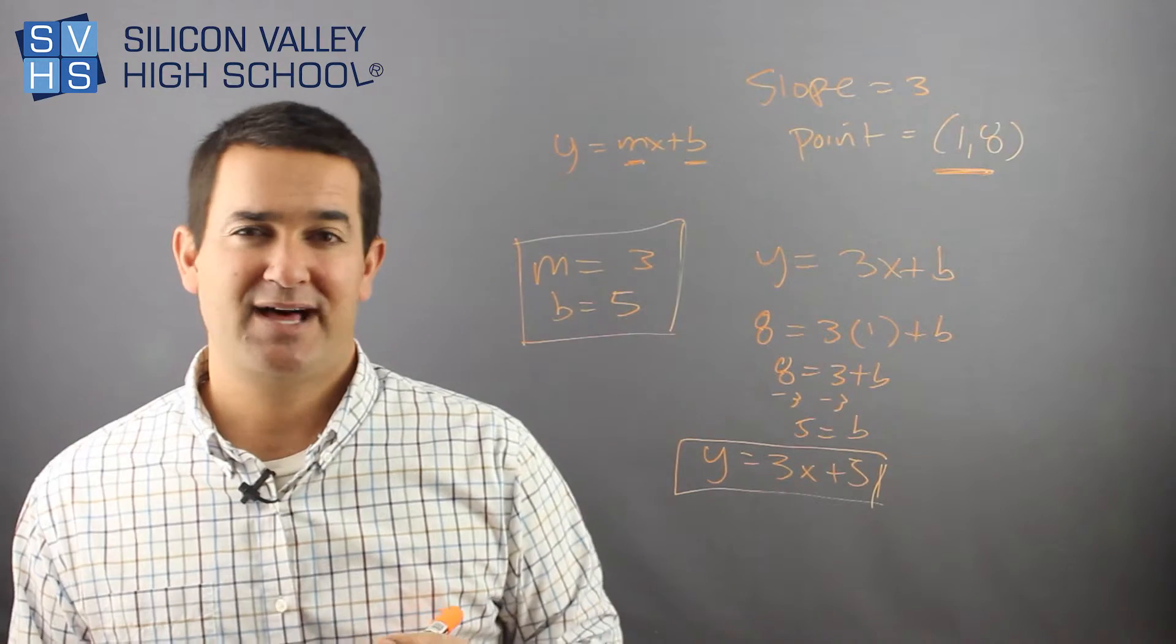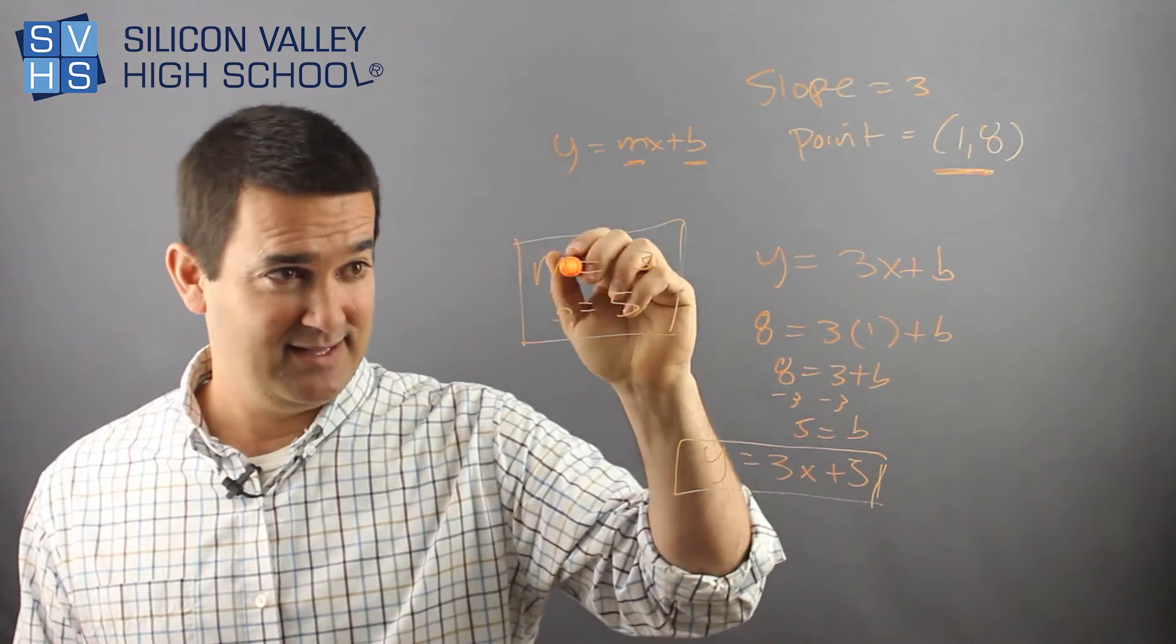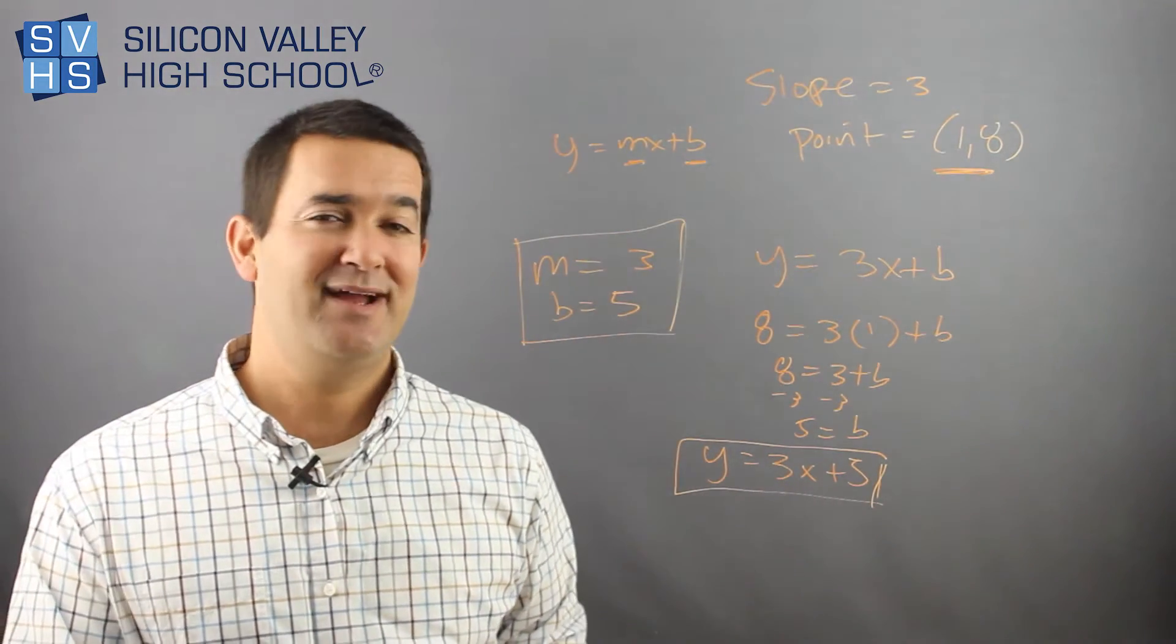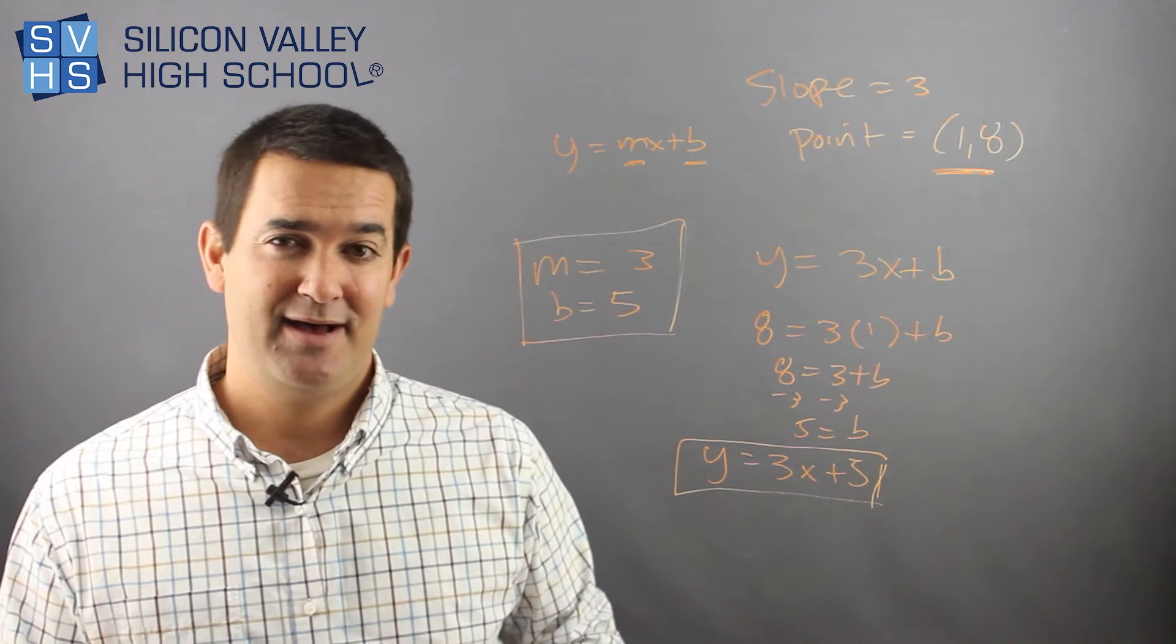So again, these equation of a line, the one thing they have in common is that they're y equals mx plus b. There's no escaping that you need the m and the b. How you get there is going to be different in every single problem. This one is pretty easy because they gave me slope, but that's it.